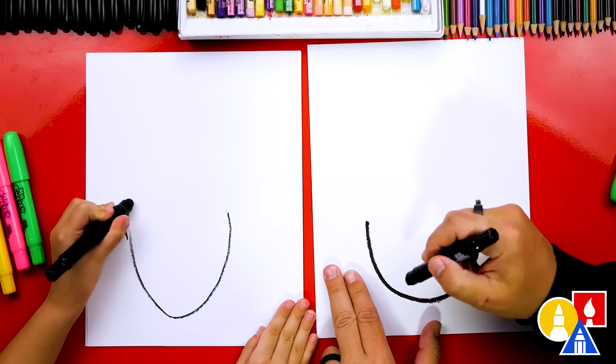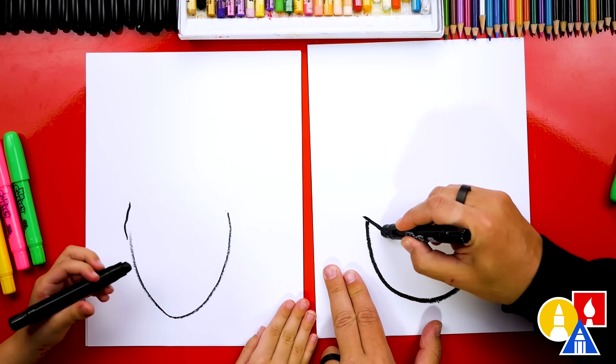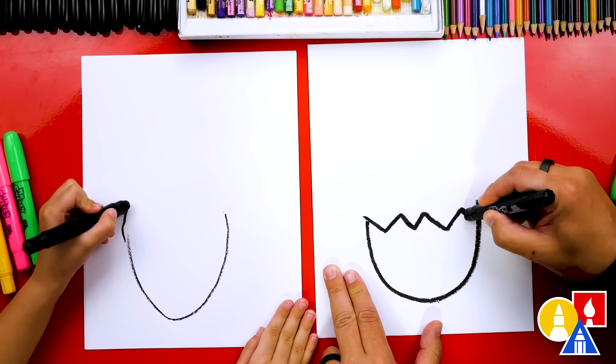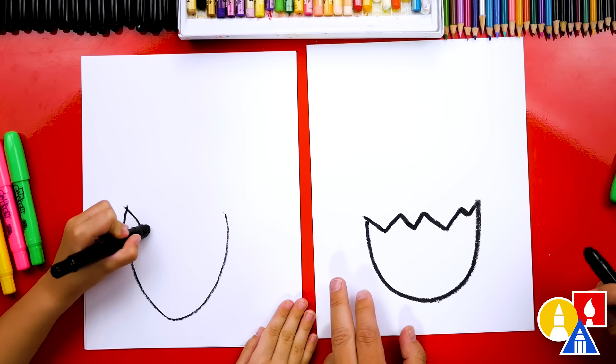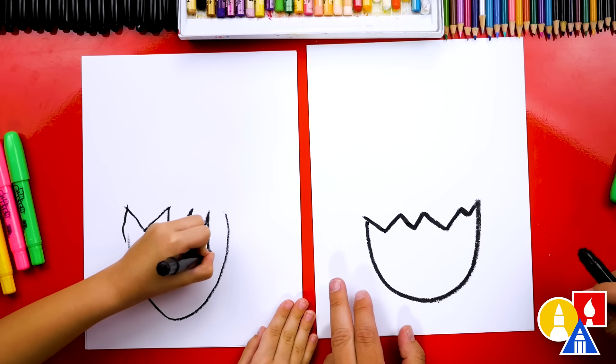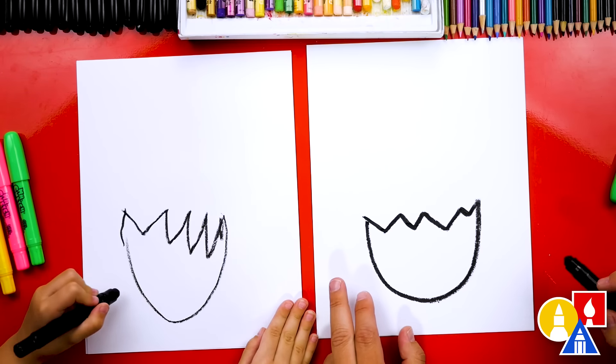Nice. Now let's draw it cracked open. We're going to draw a zigzag line across to the other side. There, it's cracked open. I like that. Lots of cracks.